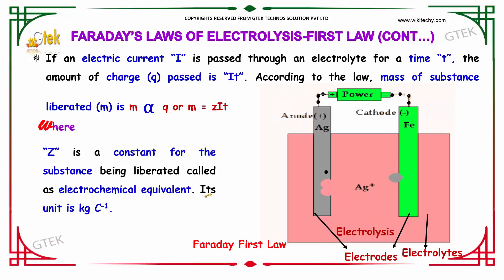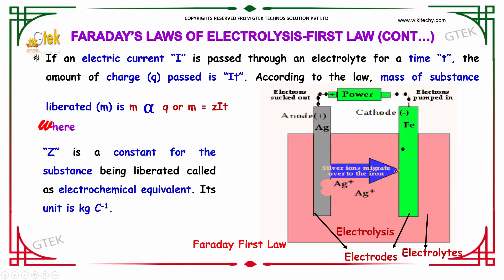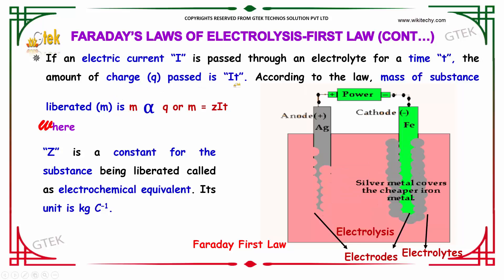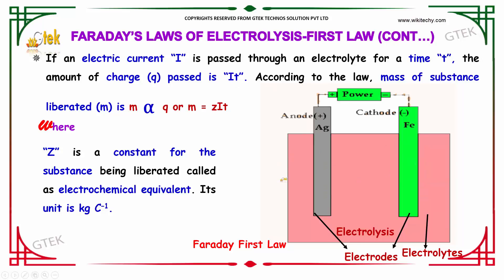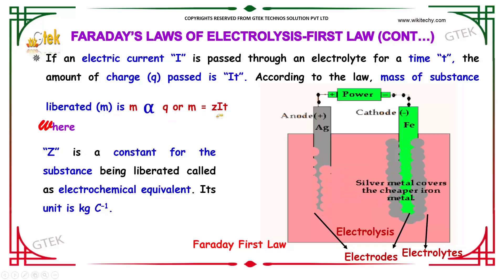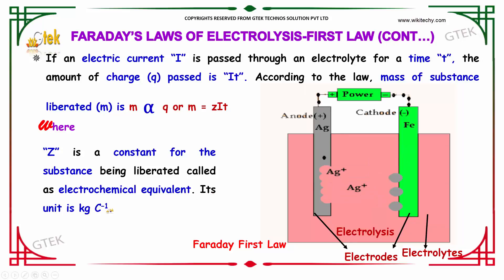Moving further towards Faraday's first law — if an electric current I is passed through the electrolyte for a time t, the amount of charge passed is considered as I into t. According to the law, the mass of substance liberated is directly proportional to the charge, so m is equal to z into i times t. Here, z is the constant for the substance being liberated and is called the electrochemical equivalent, and its unit is kilogram per coulomb.